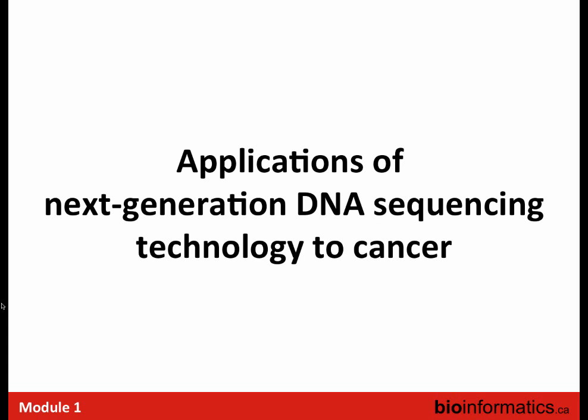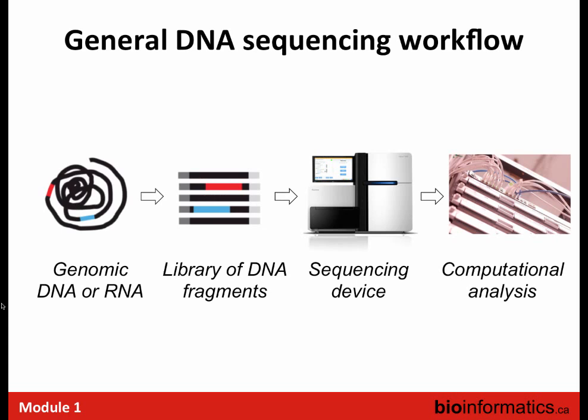Moving specifically to the topic of this workshop — applications of next-generation sequencing to cancer — I've grossly simplified how we make NGS data today into four steps: cells are lysed to extract genomic DNA or RNA; we then make a library of DNA fragments with adapters compatible with our next-generation sequencers; this goes on a sequencing device (the most famous vendor is Illumina, and most of the data I'll show comes from Illumina); and then computational analysis is what all of you are going to do once these data are made.